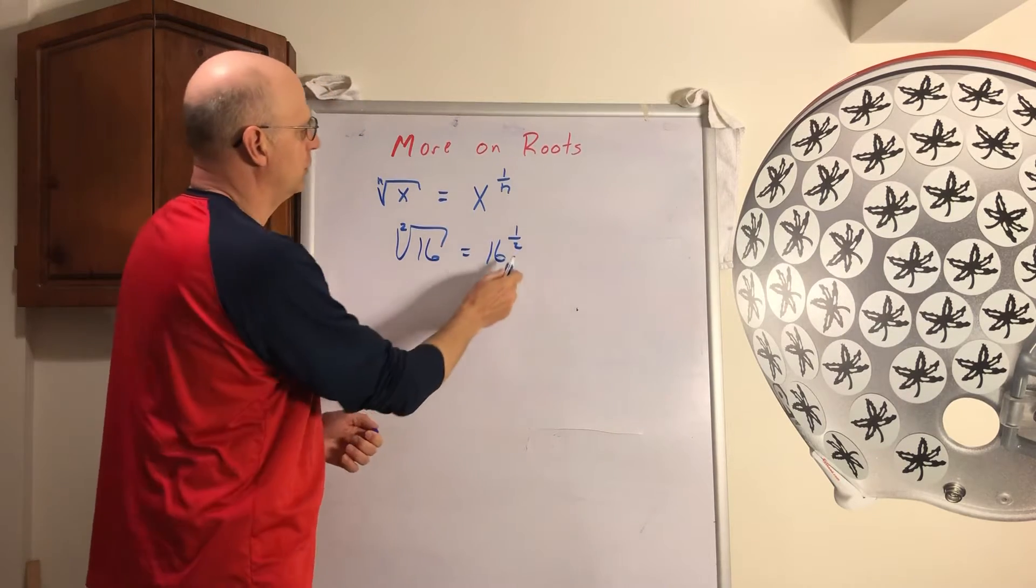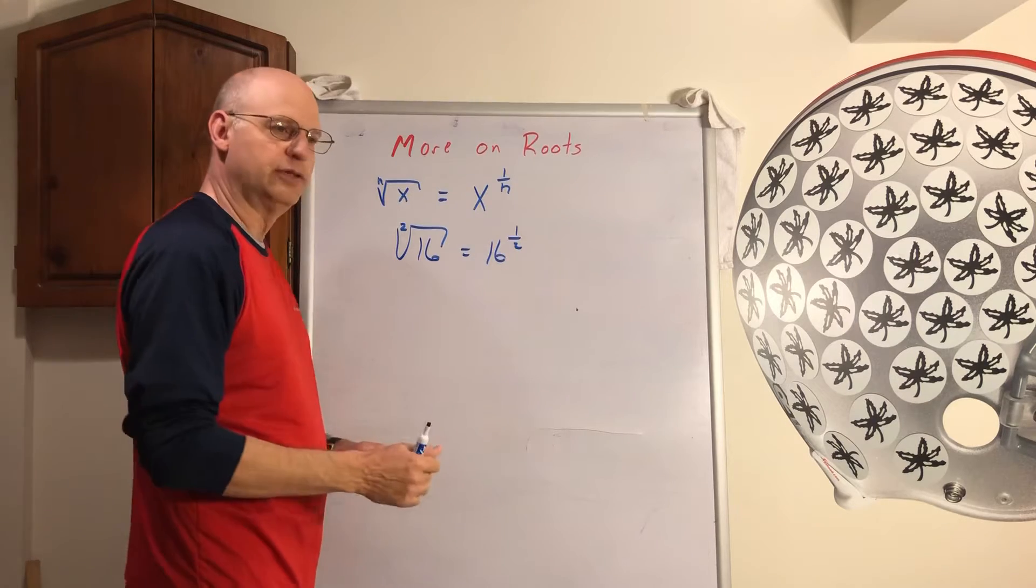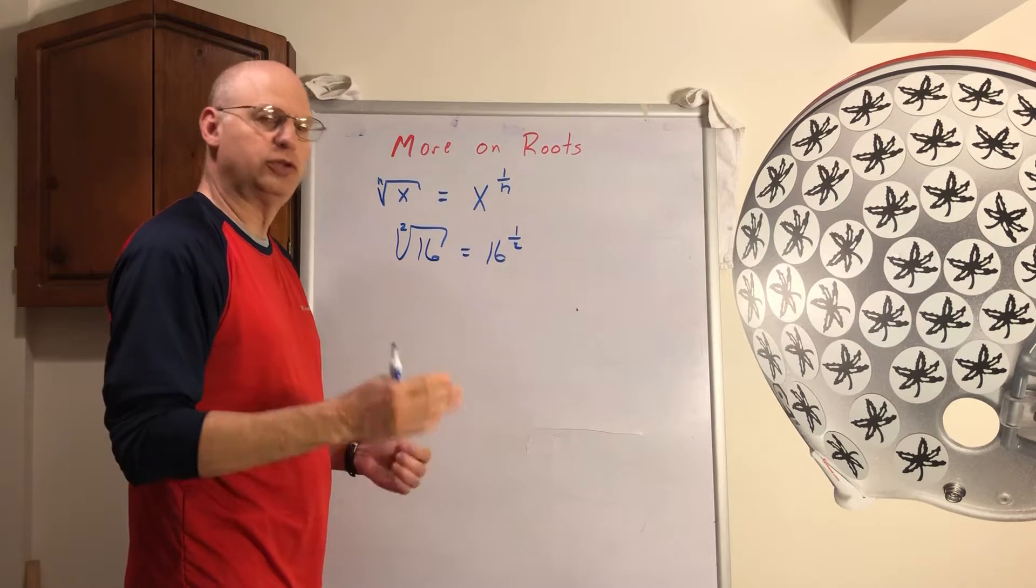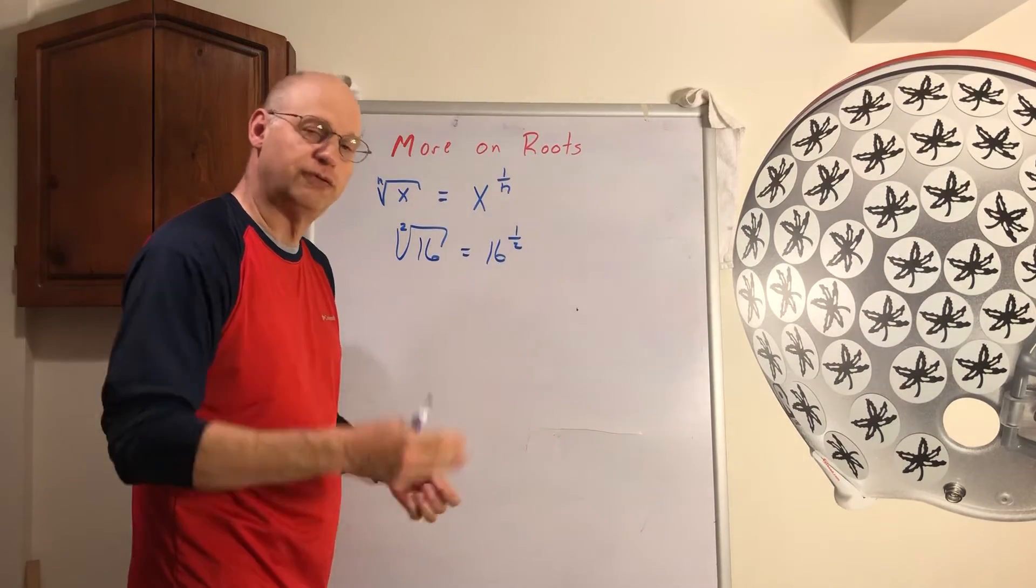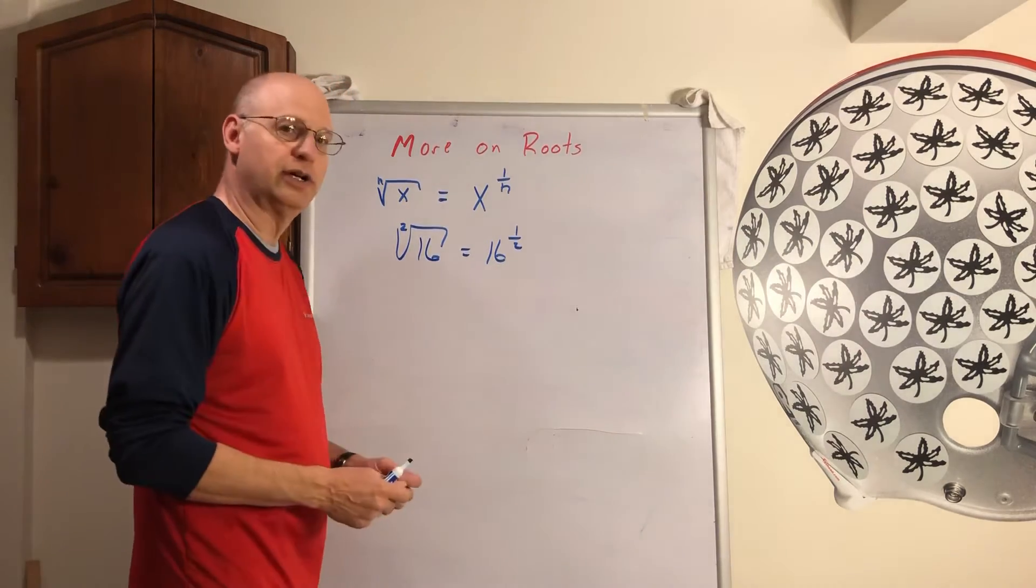Now what it means when there's a little 2 there, is what number do you multiply together, times itself, to get 16? Well everybody knows that's 4.